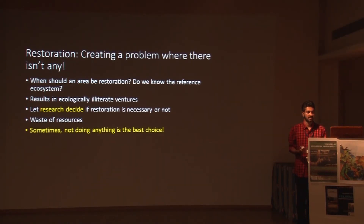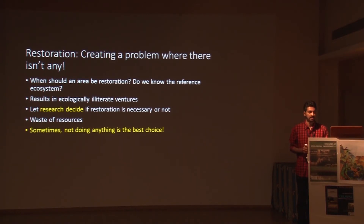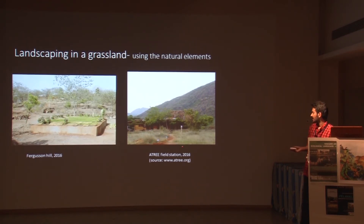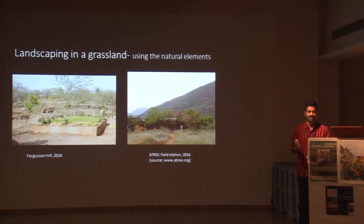Another theme is restoration - is it really necessary, or are we creating a problem where there isn't any? When should you restore a place? Several times, at least in the case of Pune and peri-urban areas, restoration has resulted in ecologically illiterate ventures. I would suggest: let research decide if an intervention is necessary and if yes, how it should be done. Sometimes not doing anything is really the way forward. A bad example is Ferguson Hill creating lawns where they are not necessary. A good example is the Atree Field Station in Agasthyamalai in the southern Western Ghats - they retained grassland areas completely as they were, created minimal disturbance, maintained natural tracks, and used minimal interventions. We should try to replicate something like this.